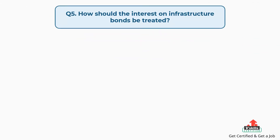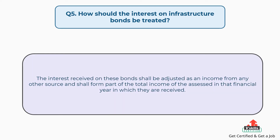Question number five: how should the interest on infrastructure bonds be treated? The answer is, the interest received on these bonds shall be treated as income from any other source and shall form part of the total income of the assessee in that financial year in which they are received.